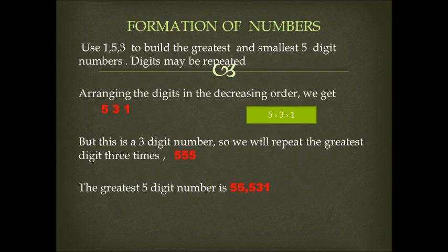Clearly, 5 is greater than 3 is greater than 1. But this is a three-digit number. So we will repeat the greatest digit three times. In this case, 5 will be repeated three times. So the greatest five-digit number formed will be 55,531.